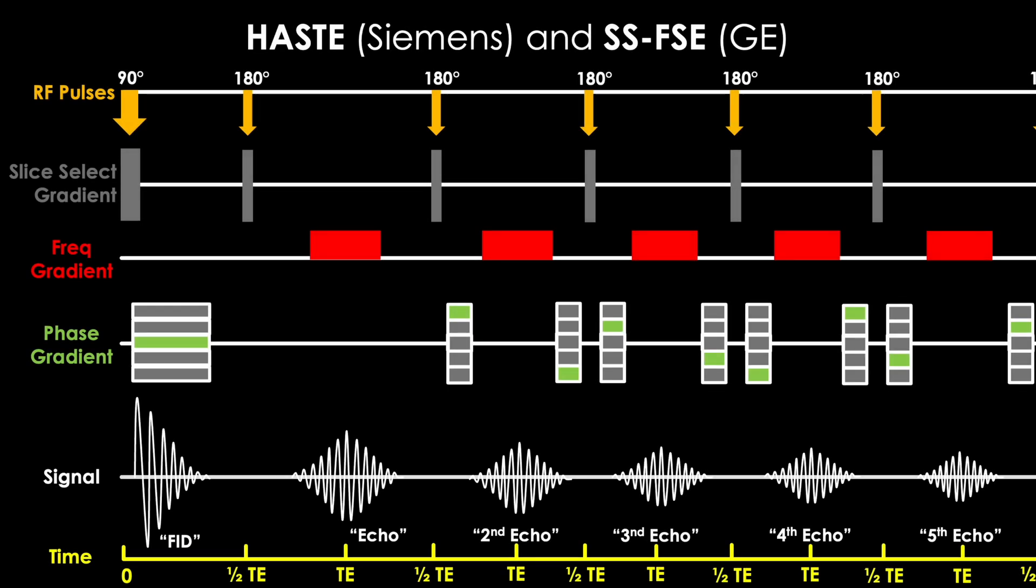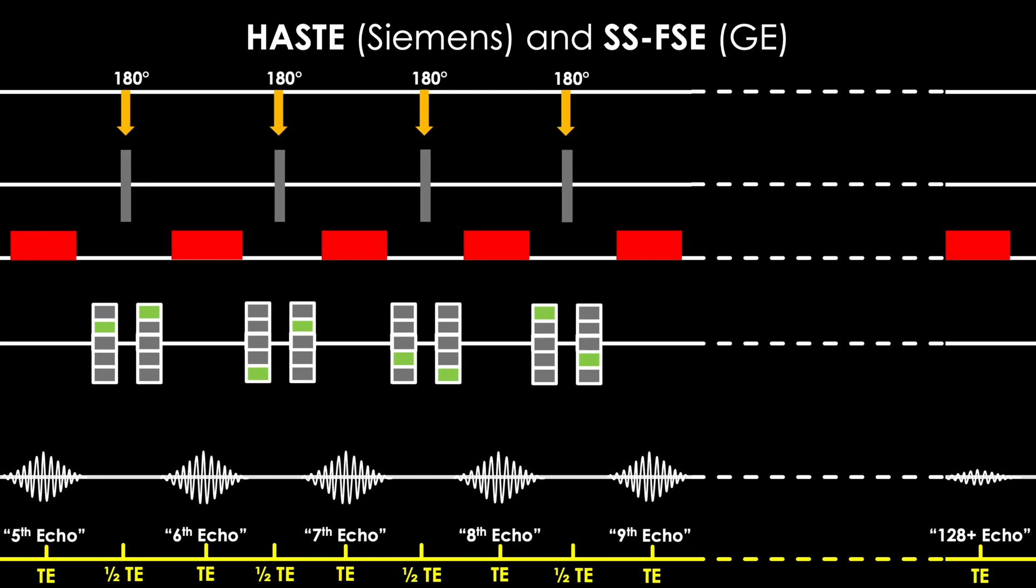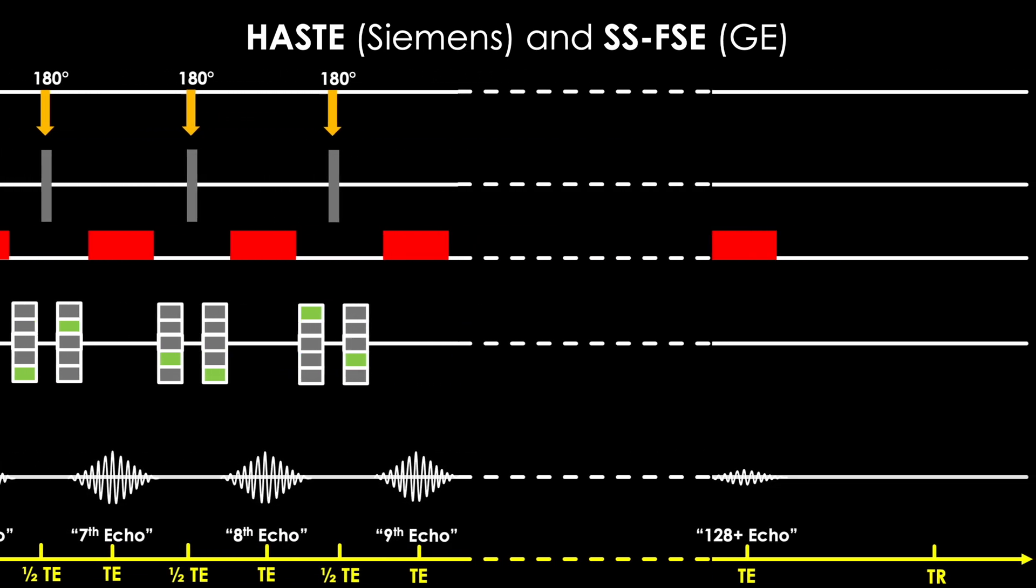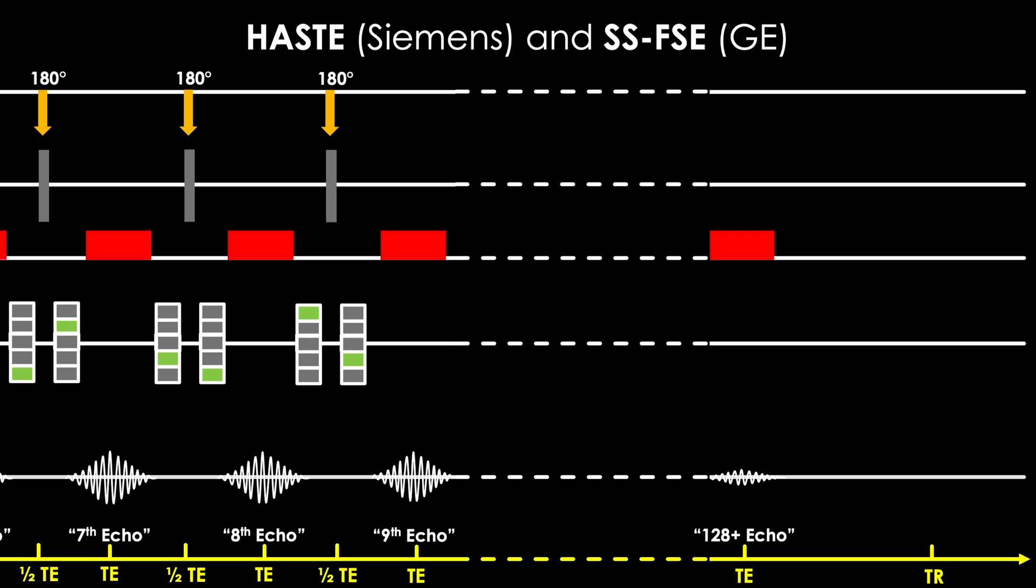On the last lecture, link above, we introduced the ultra-fast spin echo sequences including the haste and SSFSC sequences where we produce echo after echo to incredibly capture all the data we need to produce an entire slice of the body in a single cycle. But I'll admit it was a bit unsatisfying.